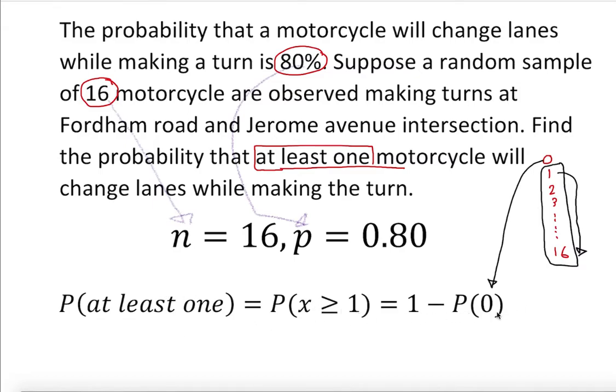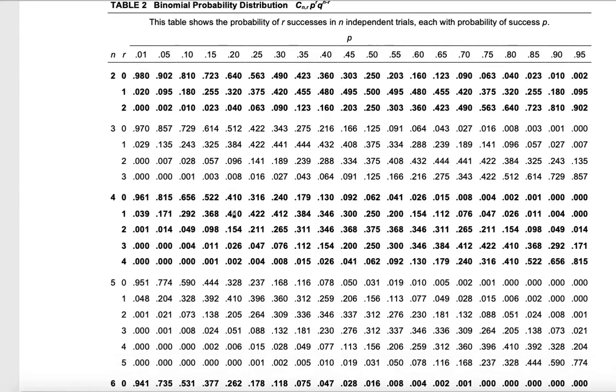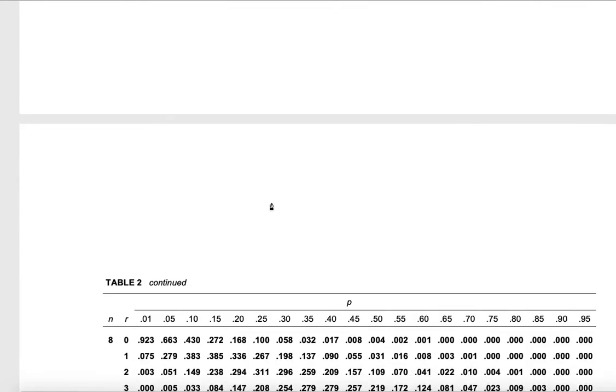So 1 minus probability of 0. What is probability of 0? Let's take a look. We have 16, then p is 80, and we need 0. So 16, p is 80. Let's go with the binomial probability table. We go with 16.